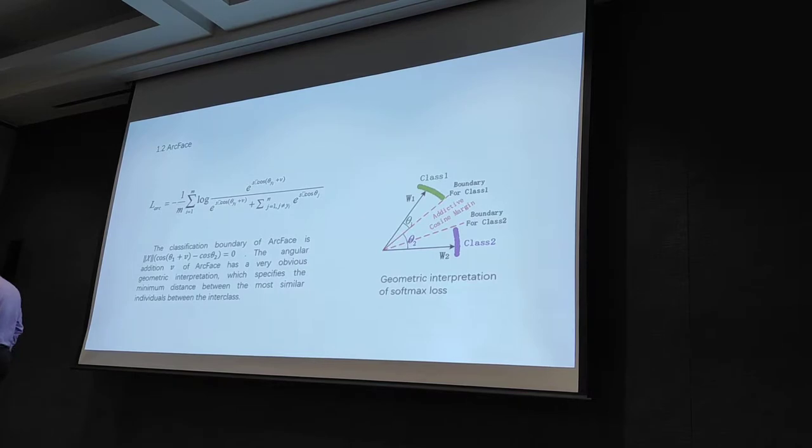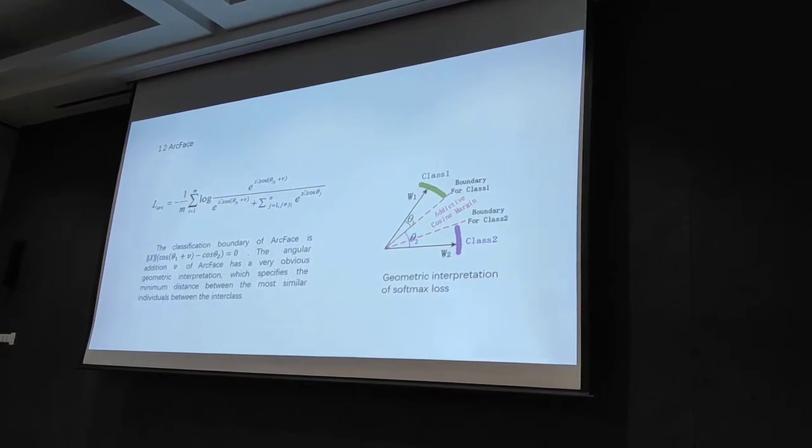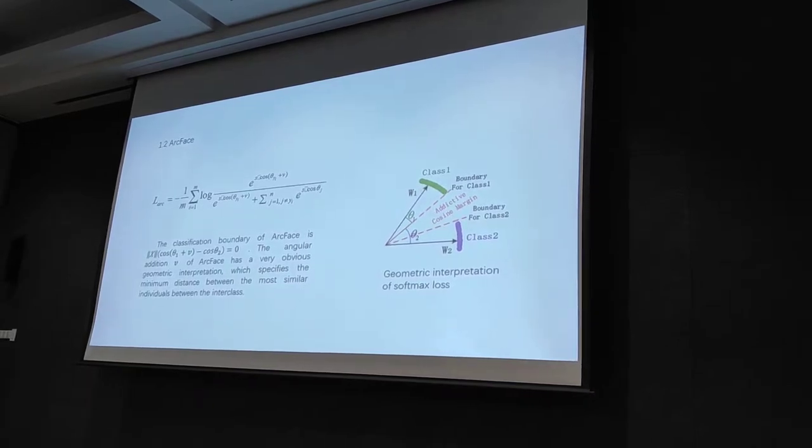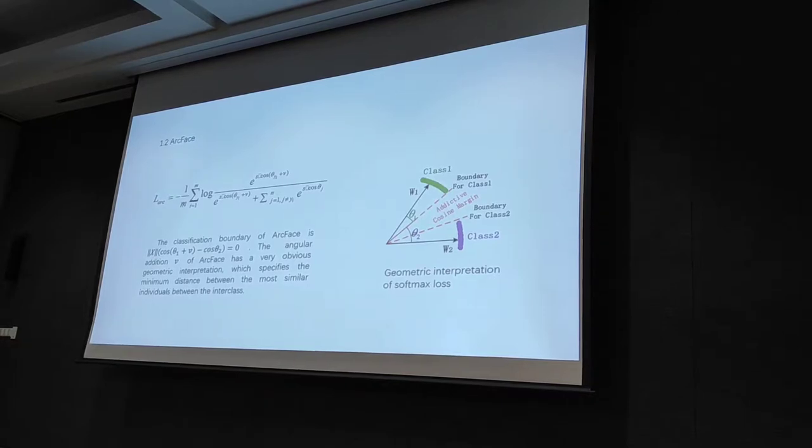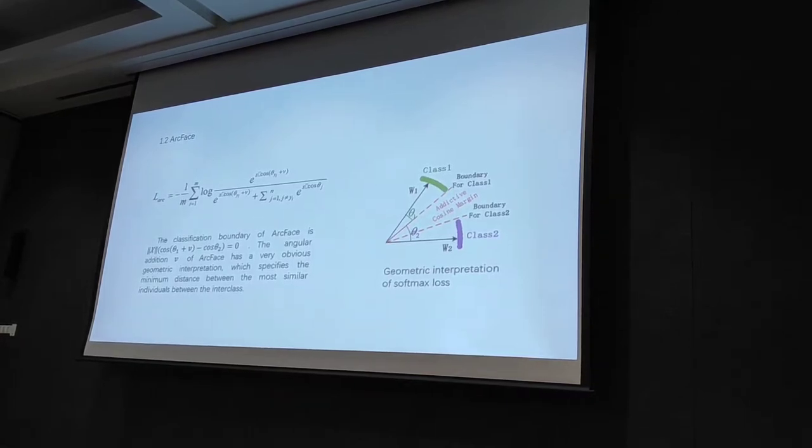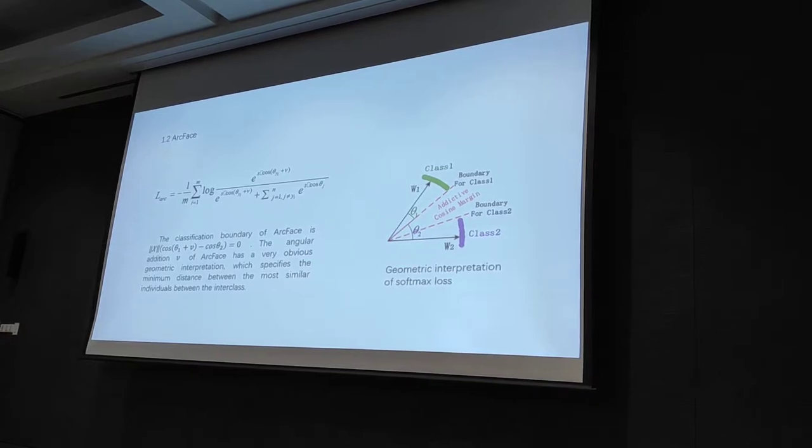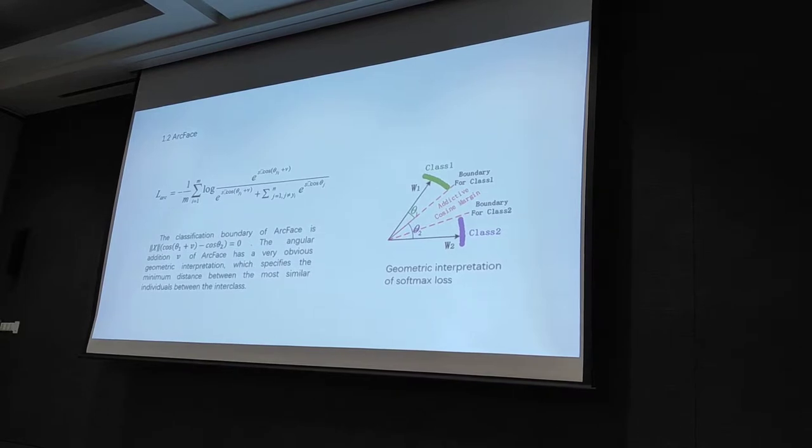By enforcing this kind of additional region between the two classes, the feature space of each class has been compressed. Basically, the inter-class variance has been increased. At the same time, the intra-class variance has been decreased by adding this additional term.